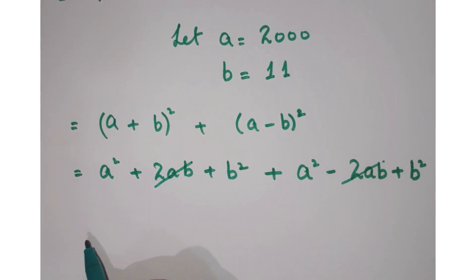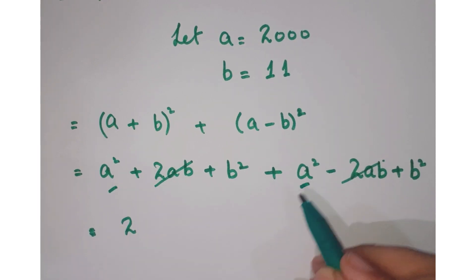Now as you can see, this 2ab and this 2ab get cancelled. So you can write it as 2a square and a square added up: 2a square plus 2b square.